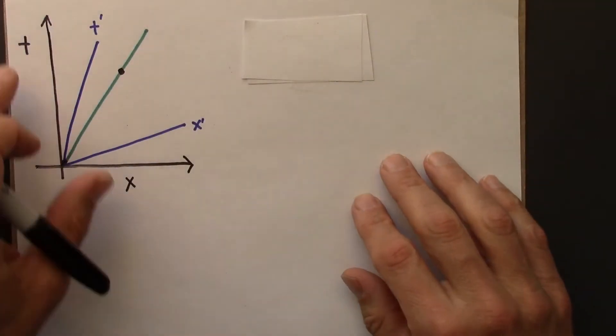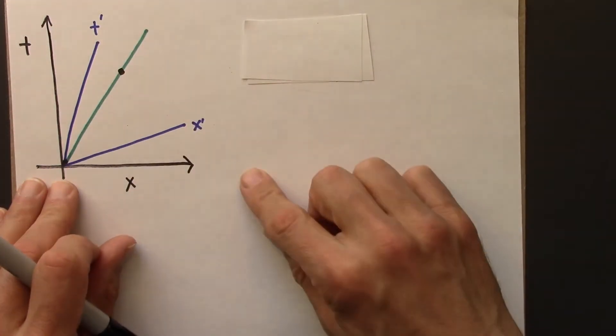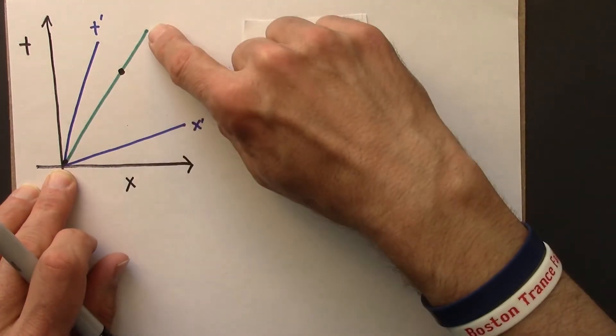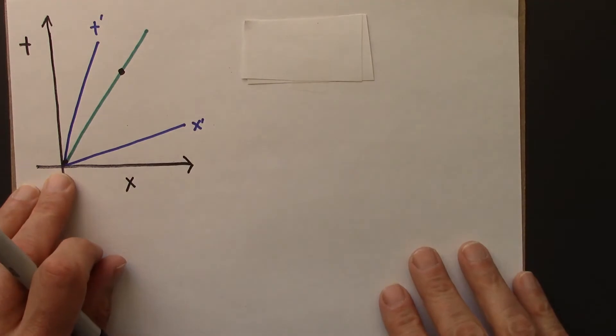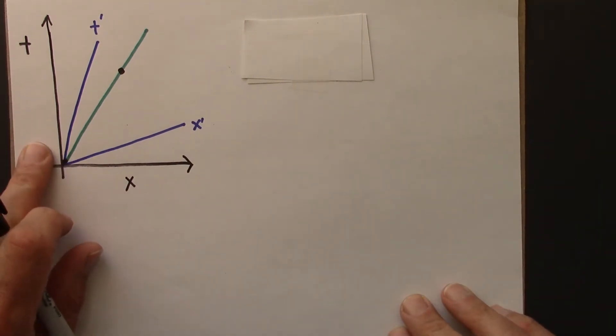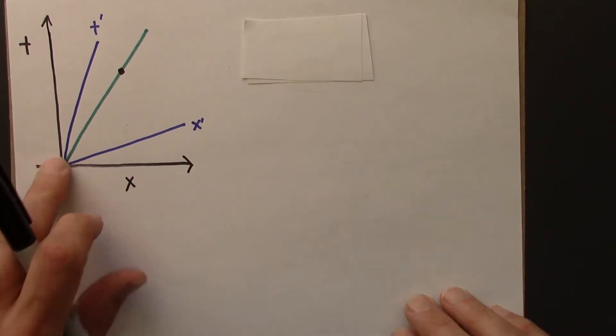So we'll start with a similar picture, a two observer diagram, and we want to know the velocity of the object described by this world line.